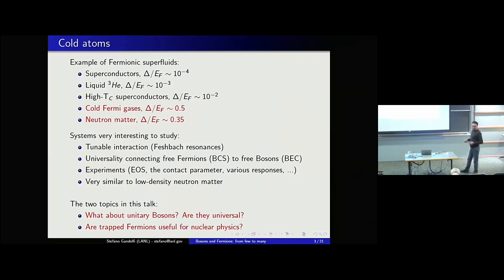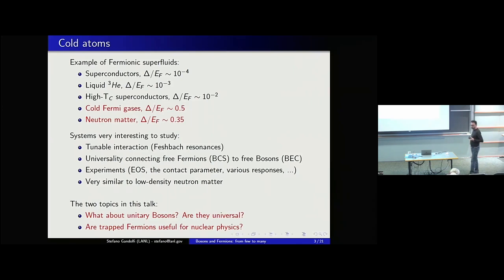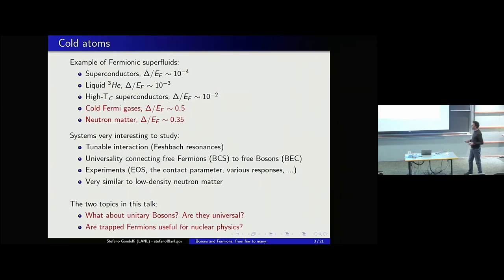There are beautiful experiments where people measure the equation of state, the contact parameter in various ways, and various response functions like density response and spin response. What I like about these systems is that they have very similar properties to low-density neutral matter, and that's why, as a nuclear physicist, I became very interested in them. In this talk, I will focus on two topics: first, unitary bosons — are they universal? Unitary Fermi gases received a lot of attention, but unitary bosons did not receive the same attention. The second part discusses fermions in a trap, and whether they can be useful for learning about nuclear physics.